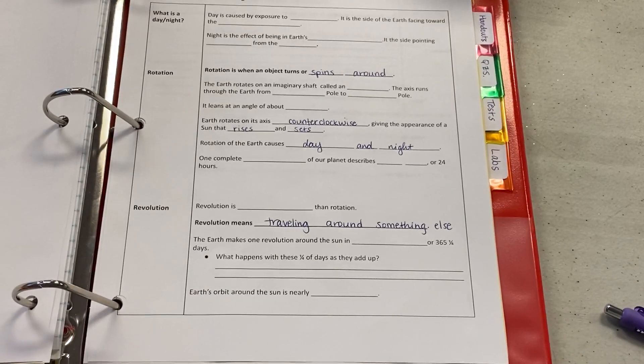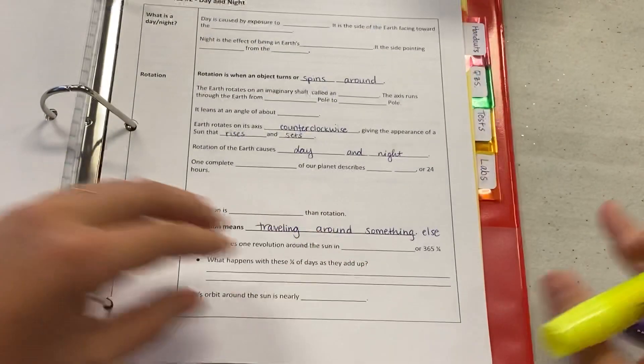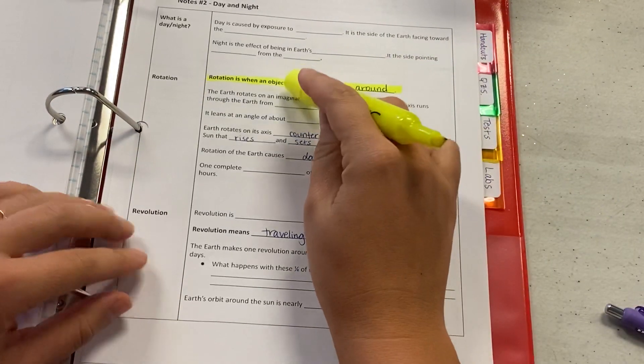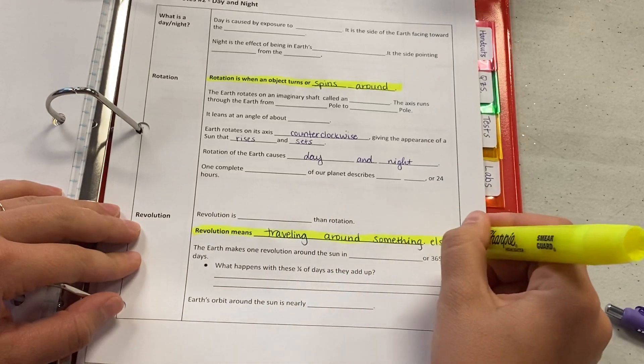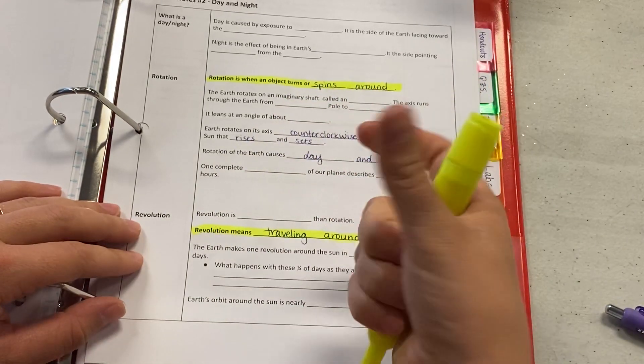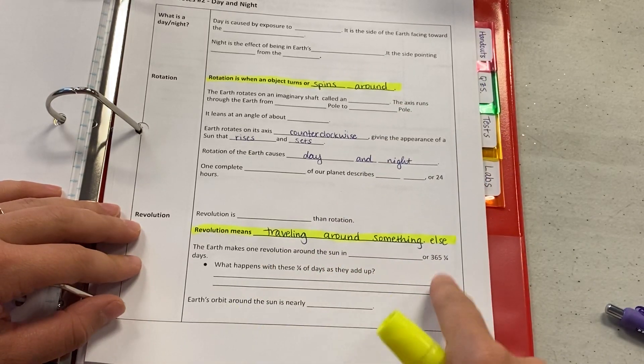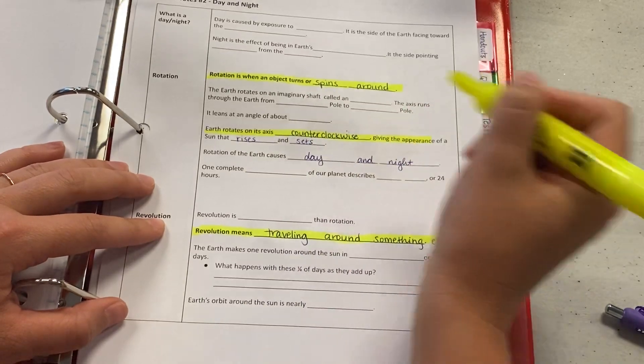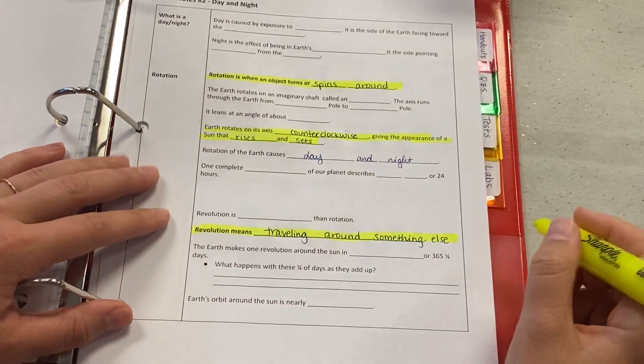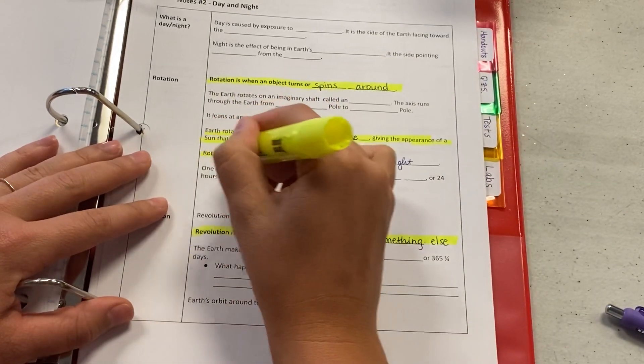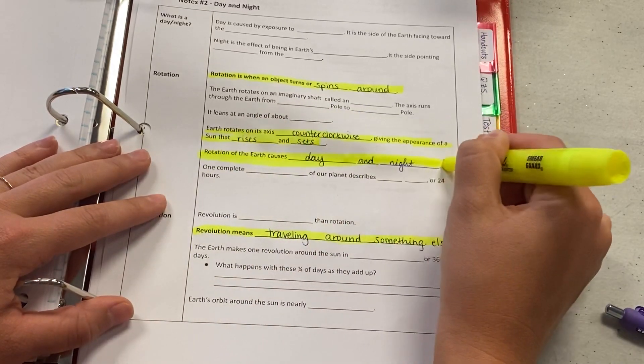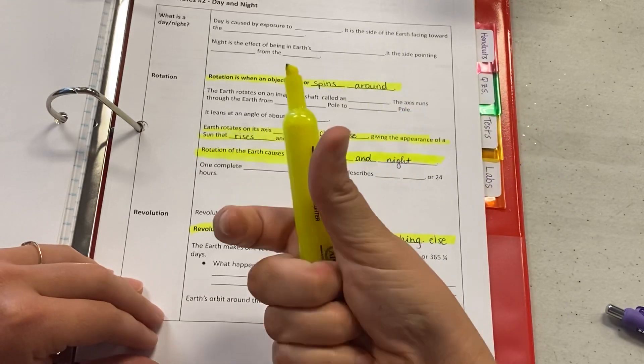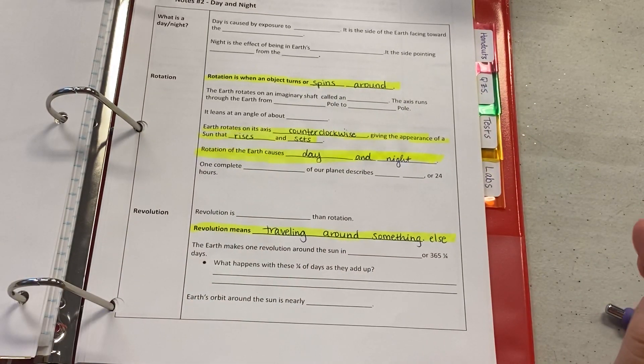Then, going on to notes number two, having to do with day and night. This is where we talked about the difference between rotation and revolution. Here, you need to know the definition of rotation. This is when an object turns or spins around. Be very careful with this and revolution. Revolution means traveling around something else. Make sure you know it spins around on itself. That's rotation. When you see the word something else, when it's traveling around something else, that is key for revolution. You also need to know that Earth rotates on its axis counterclockwise, which gives the appearance of a sun that rises and sets. Basically, what you mostly need to understand from that is that it is the rotation of the Earth that causes day and night to happen. If the Earth didn't rotate, we would be either completely in day all the time or completely in night all the time. So, that rotation or spinning that, the Earth itself spinning around is what causes the day and night pattern that we are used to.